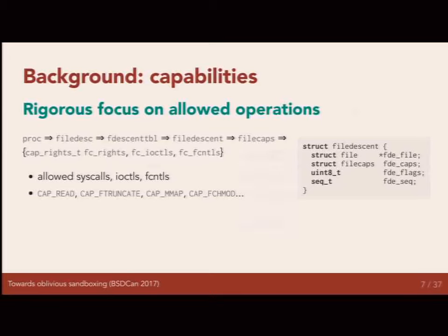I can take a capability that allows me to read, seek, truncate, and mmap, and turn it into a capability that's only allowed to read and not even allowed to seek. Then I can hand that off to a child process and say, okay, worker process, you're allowed to do less with this file than I am. A worker process exposed to untrusted garbage from the Internet is just allowed to read, not write. We can have very fine-grained delegation of rights.